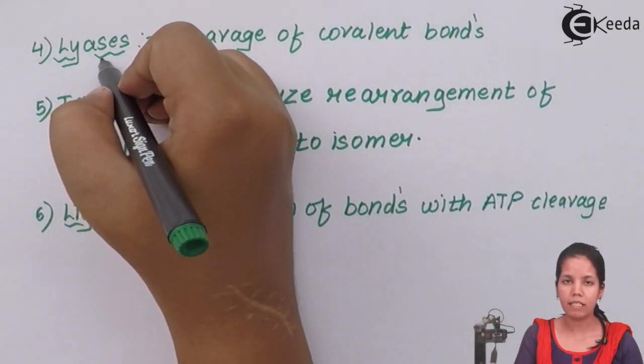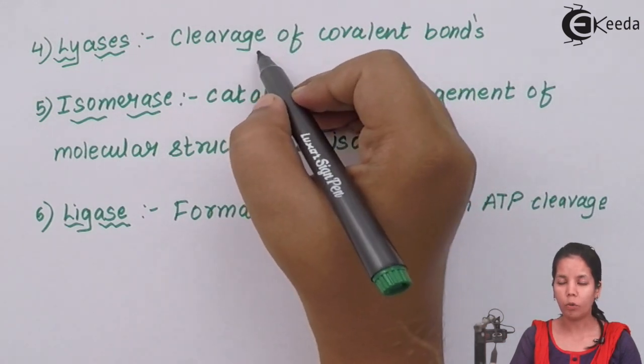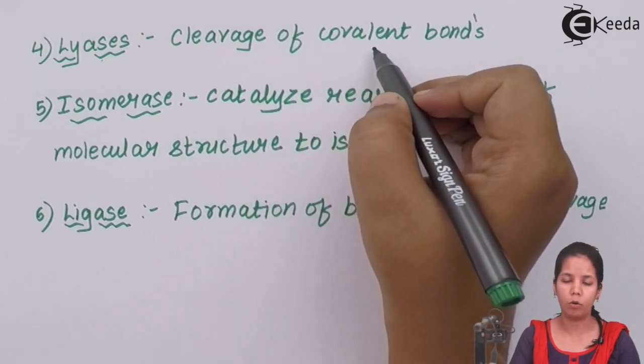Lyase. Lyase means lysis of bonds. They help in cleavage or breakdown of covalent bonds, one of the strongest bonds.